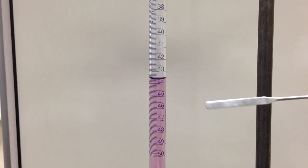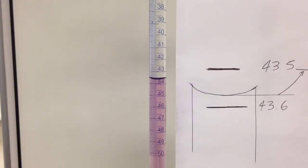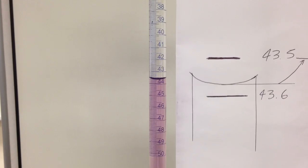Now we take our eye, put it at the level of the meniscus, and we need to estimate our last digit. That will be up to you, the observer.